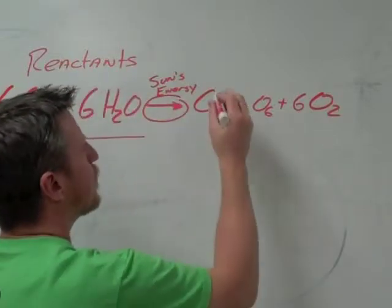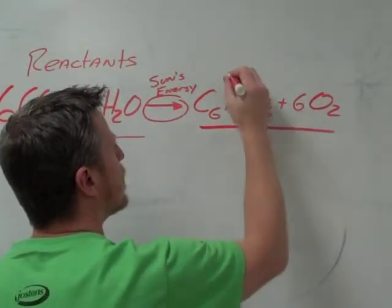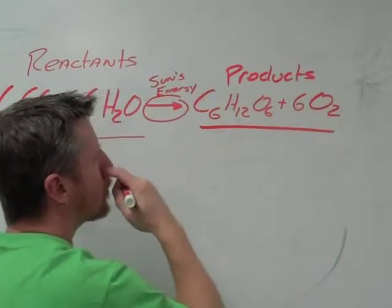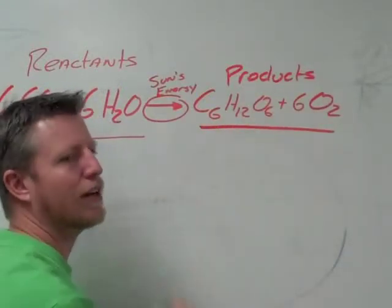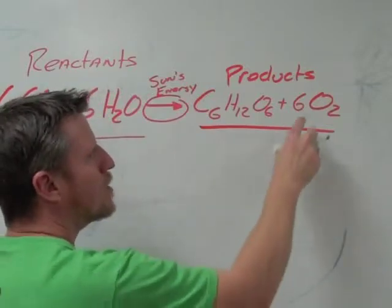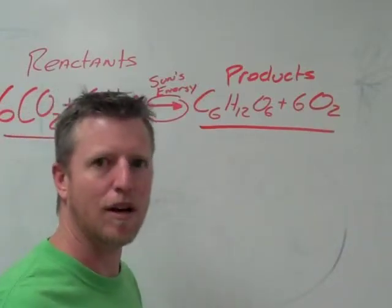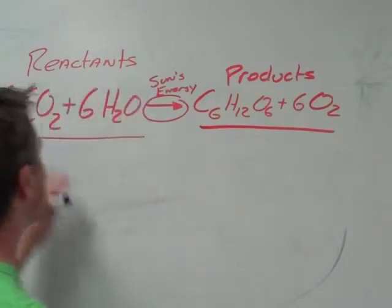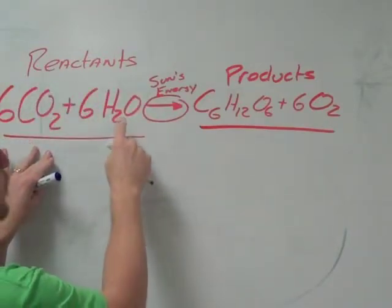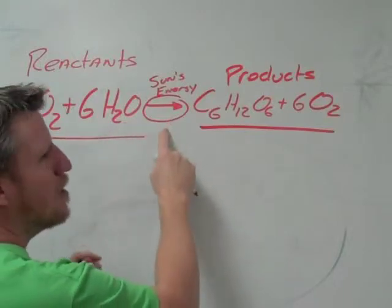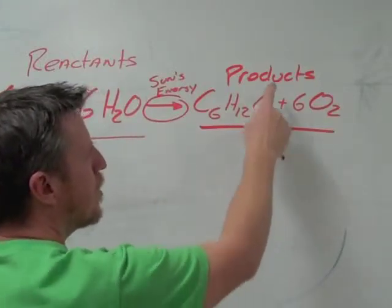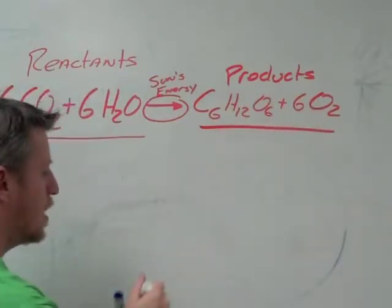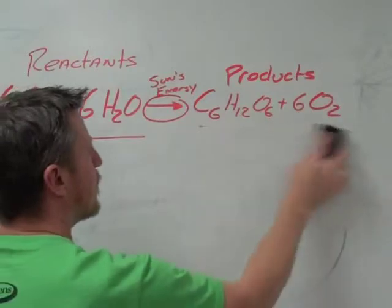So the products are what's on the right side of the arrow. So these are called products. Now, our products are the C6H12O6. That's our glucose molecule. And then we also have oxygen molecules, which are made O2. And so these are the products, the end result of our reaction. So basically, carbon dioxide with water and the use of the sun's energy produces our products, which are glucose and oxygen. So let's kind of break this down a little bit and see what else we can determine from this.